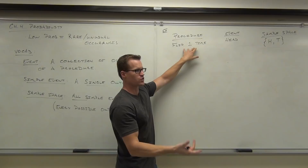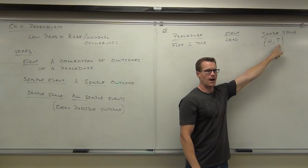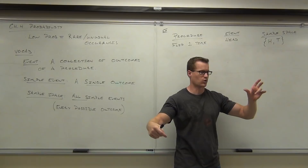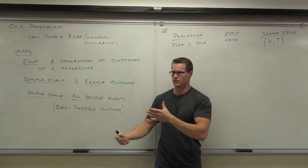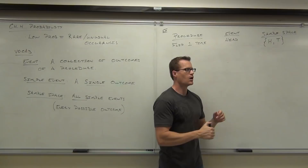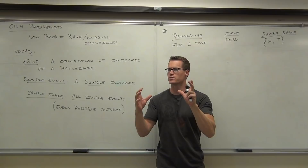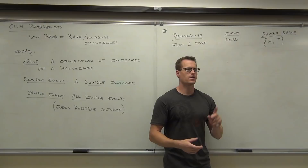To summarize: the procedure is what you're doing; the event is what you're looking for; simple events are what could happen; and the sample space is a collection of all of those things. The next example will make this even more clear. The procedure is what you're doing, the event is one outcome you're looking for, what you can get flip by flip are your simple events, and combining all of them gives you the sample space.